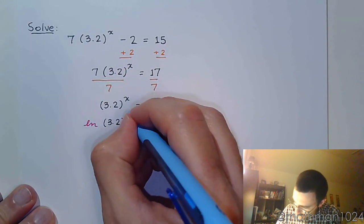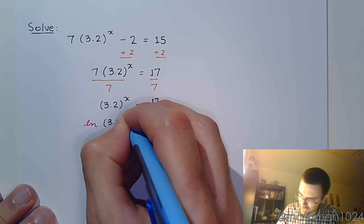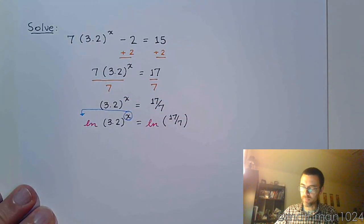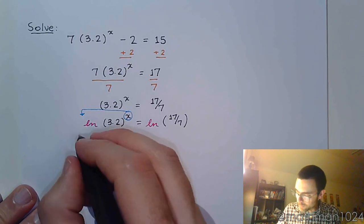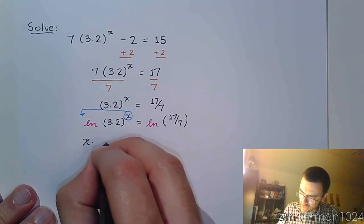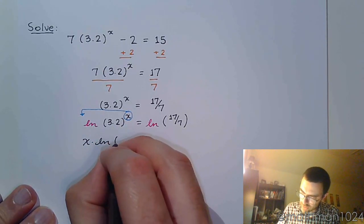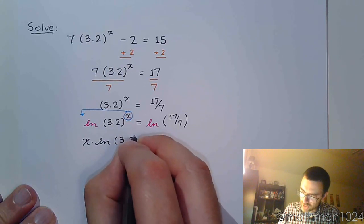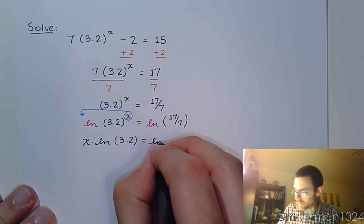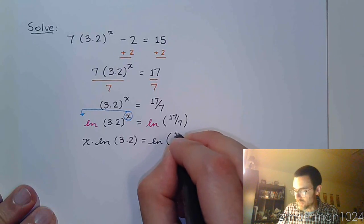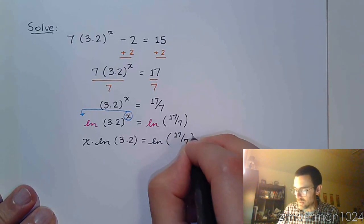Knowing why we apply the log on both sides, that this factor, or this power comes out as a factor, like that, makes it all worth it. So x times the natural log of 3.2 equals the natural log of 17 over 7.